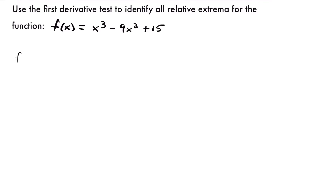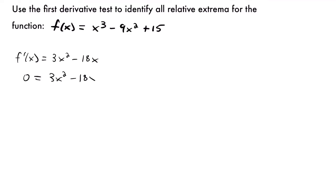We're going to have f prime of x is equal to 3x squared minus 18x. The derivative of 15 is just 0 because the derivative of a constant is 0. I got this derivative by using the power rule on each term. So if we set this equal to 0, we'll have 0 equals 3x squared minus 18x, and now we're going to solve for x to find our critical values.